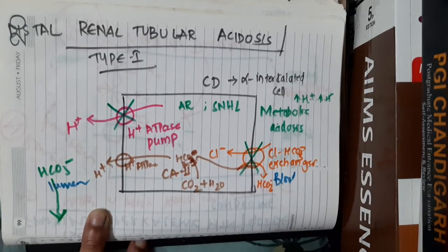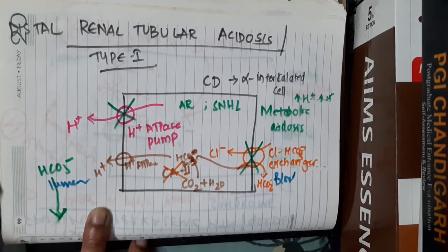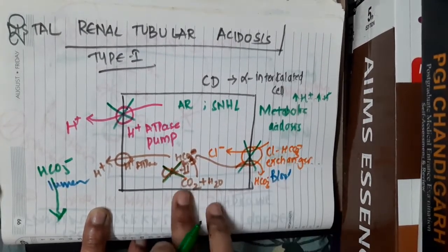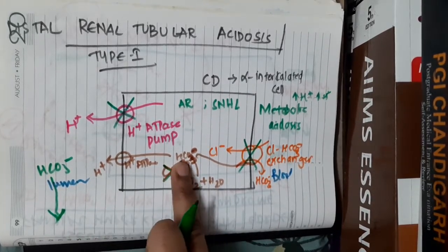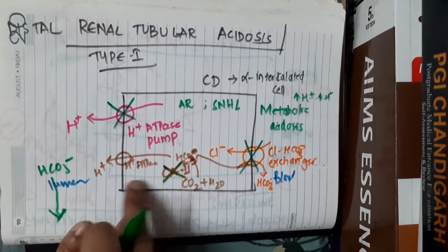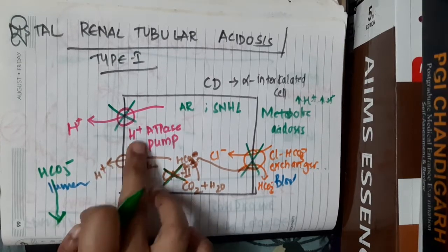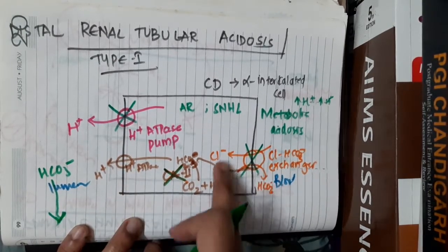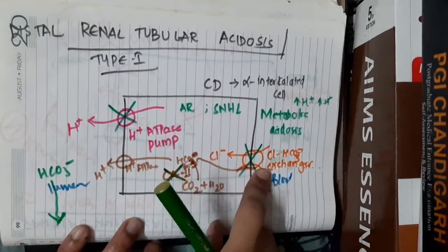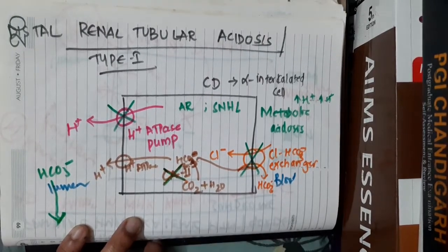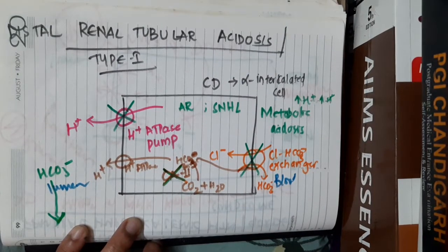Whenever there is a defect or mutation in the carbonic anhydrase enzyme, CO2 and H2O cannot form carbonic acid, and carbonic acid cannot dissociate into H+ and HCO3−. So there is no secretion of H+ ions and no reabsorption of bicarbonate, which results in distal renal tubular acidosis, or type 1 renal tubular acidosis.